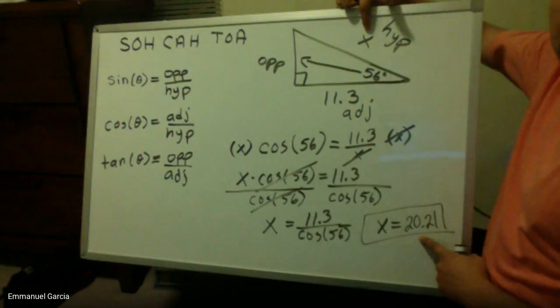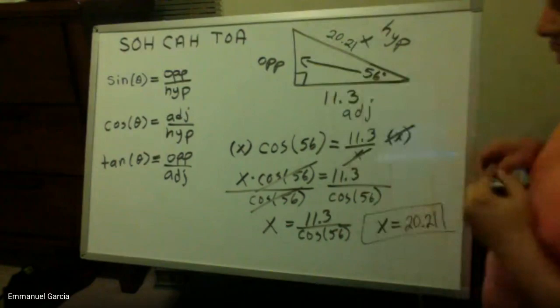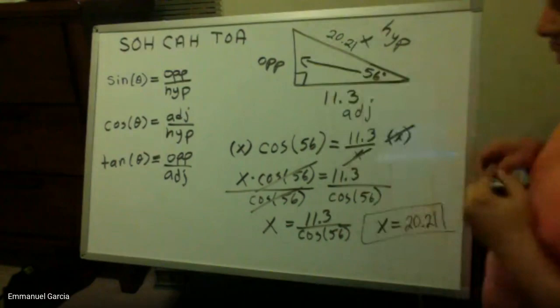So the missing side here for my hypotenuse is 20.21. So I found the missing side. And that's how you use trig functions to find the missing side of a right triangle when you are given a side of it and one of the angles.